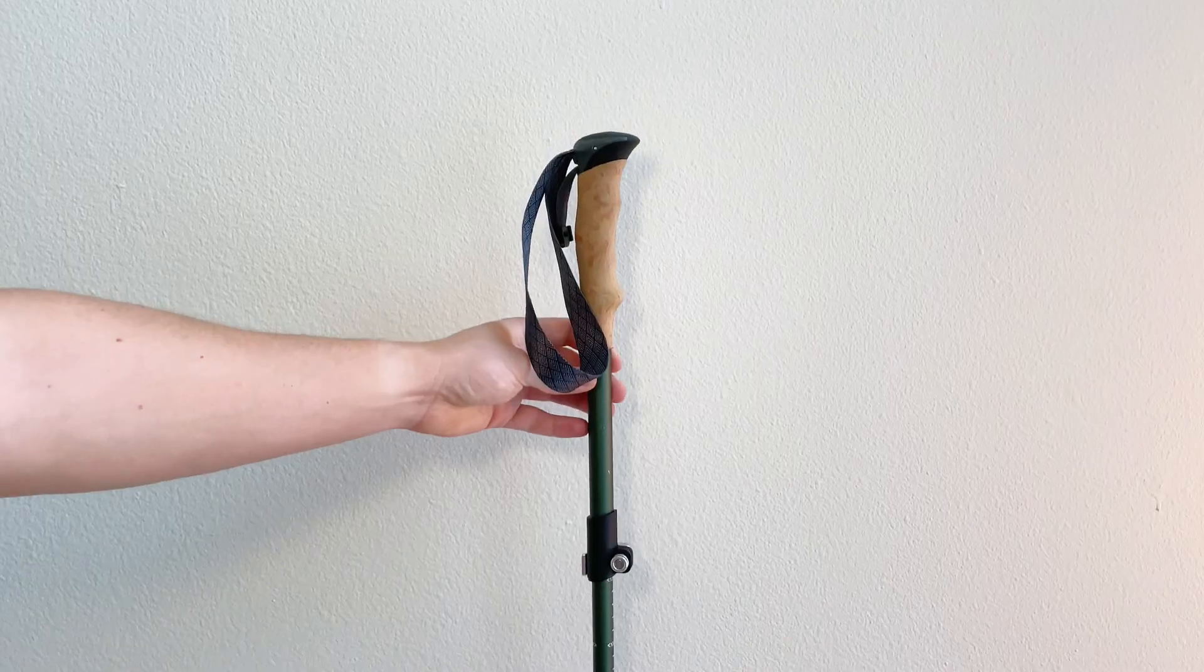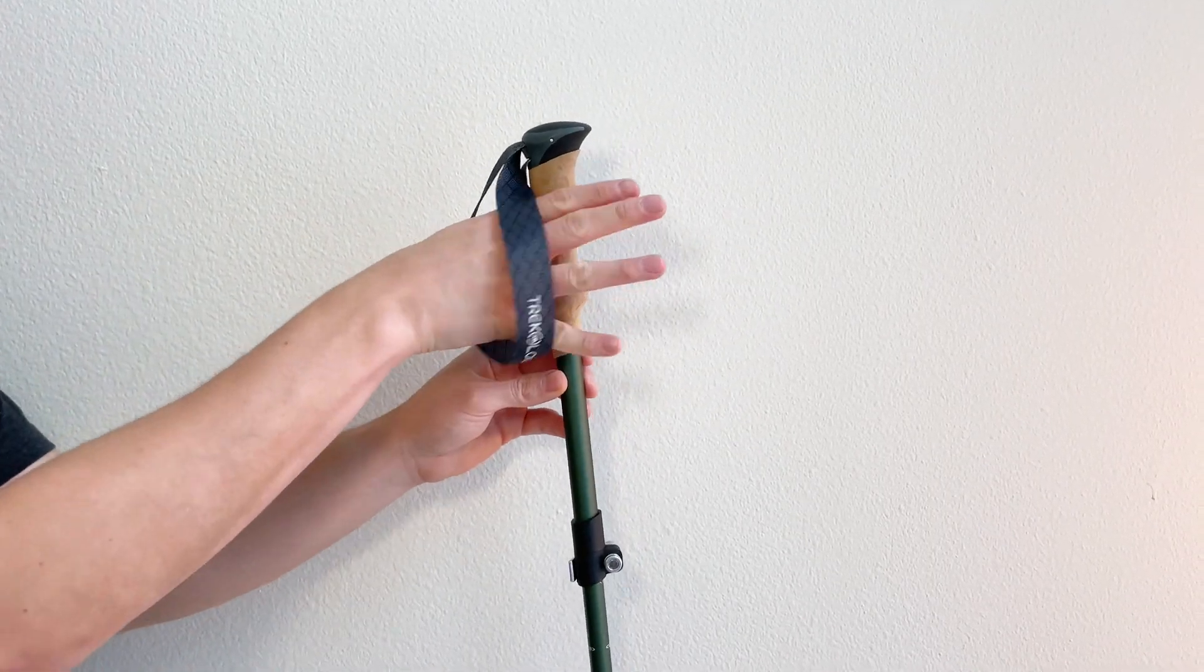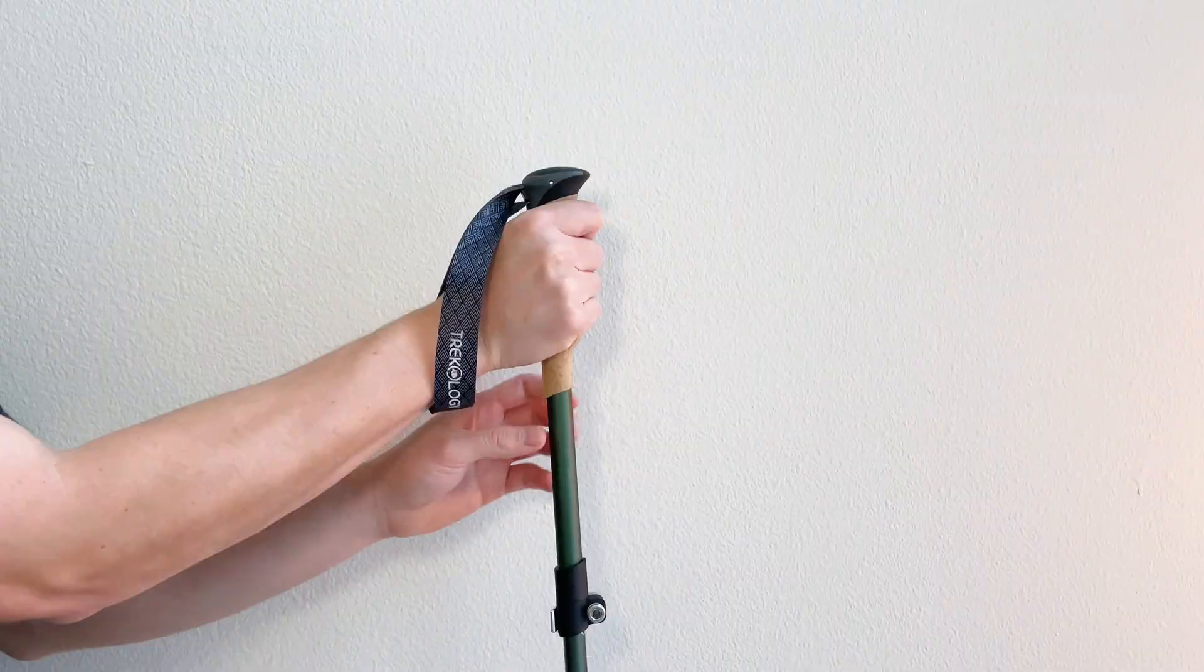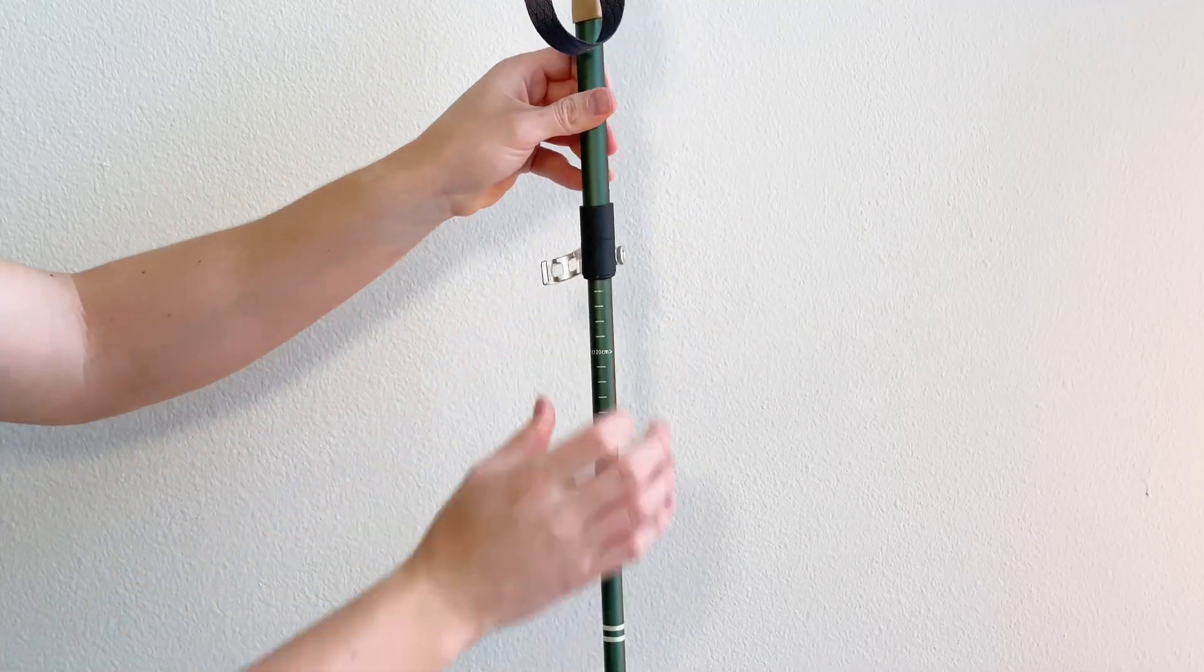If you accidentally pull the second section out, you can always reattach it. Crafted from Evergrade Aluminum Alloy, these robust poles are suitable for both men and women.